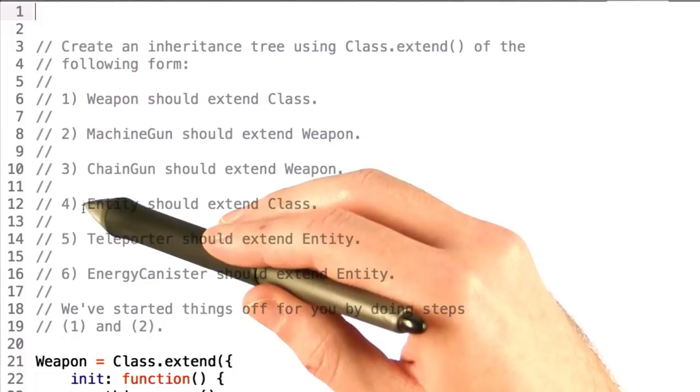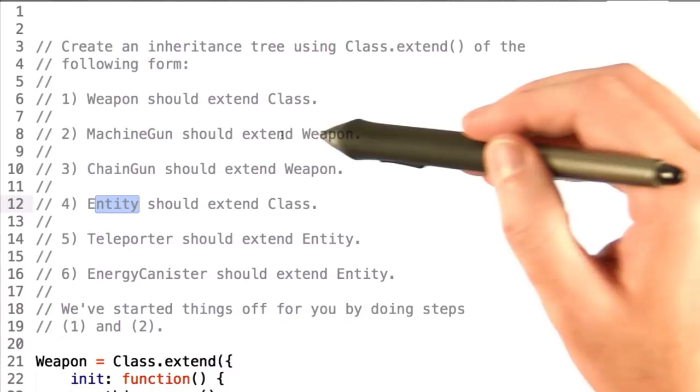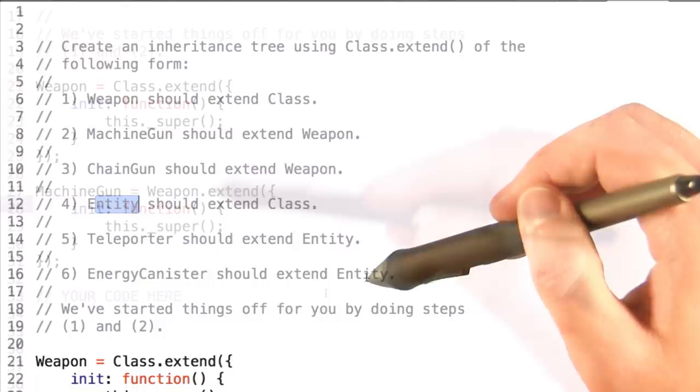So let's say we want to create the following inheritance tree. We want weapon and entity to both inherit from class, and we want machine gun and chain gun to inherit from weapon, and teleport and energy canister to inherit from entity.